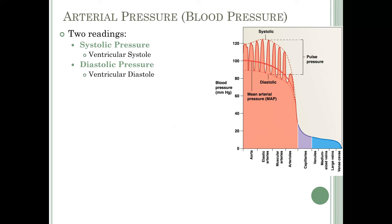Notice that by the time blood reaches the capillaries, there are no pressure fluctuations. The further away from the heart, the less you have fluctuations between systolic and diastolic pressure, due to the elastic rebound of the elastic arteries that modulate the pressure changes so that by the time blood flows into the capillaries, you have a constant pressure.